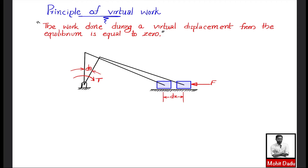According to the Principle of Virtual Work, the total work done during the virtual displacement is zero. So we can write: F·dx + T·dθ = 0, where the terms represent the work associated with linear displacement and angular displacement respectively.